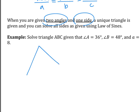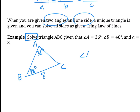This question says solve triangle ABC, so let's draw ABC and label everything we know. It tells us that angle A is 36 degrees, angle B is 48 degrees, and side a is 8. When they say 'solve the triangle,' that just means find everything — angle A, B, C, and side a, b, c. Some are already given, so we're only finding the missing ones.